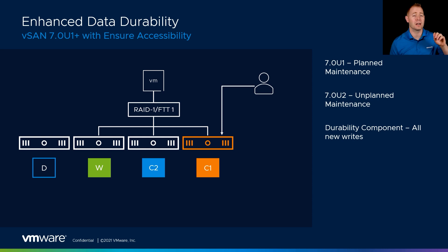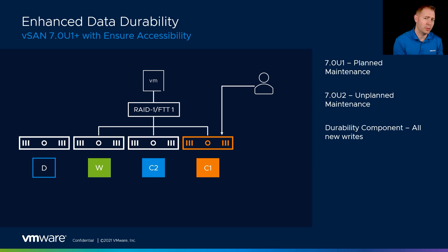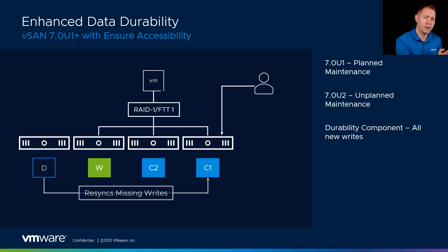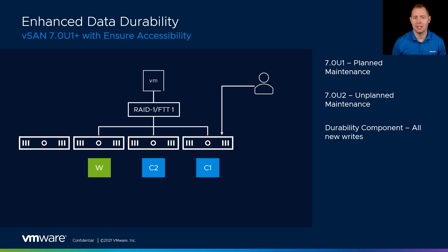The durability component would be placed on another node in the environment. In a 4-node cluster, we've got component 1, component 2, and our witness. On that fourth node, we place our durability component. For all new writes, they go to component 2 because it's still accessible and healthy, and those writes also go to our durability component. Once we're finished with the maintenance and bring host 4 out of maintenance mode, we perform a resync from our durability component over to component 1 — just the writes it missed during that maintenance window.